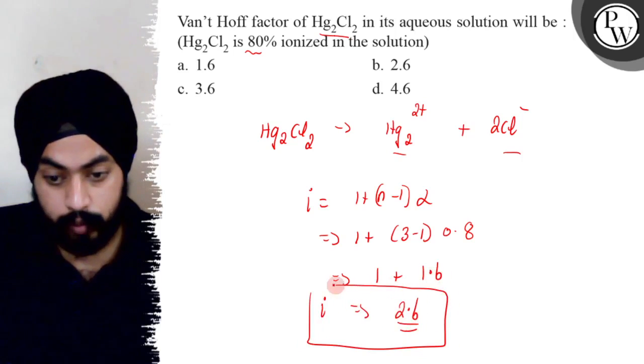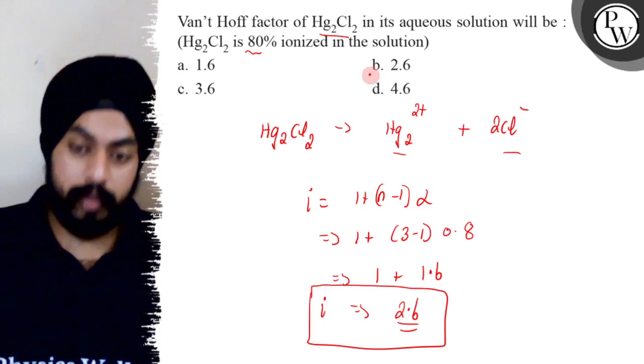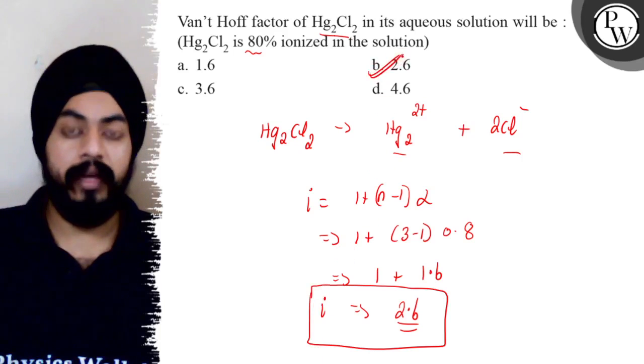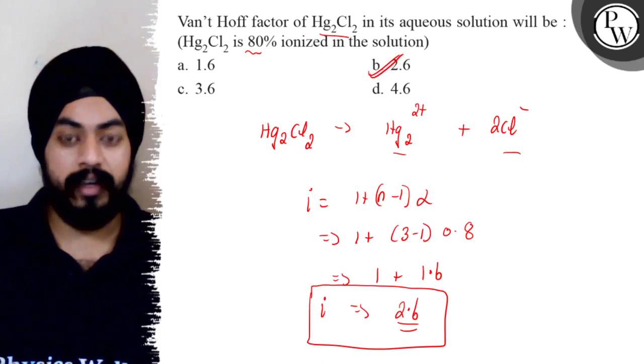So the value of i comes out to be 2.6. The correct answer is option B. I hope you understood it well. Best of luck, thank you.